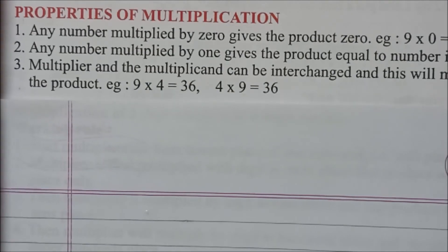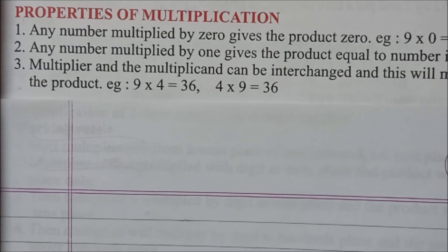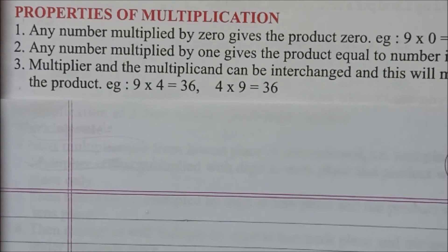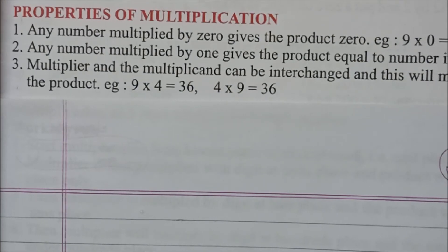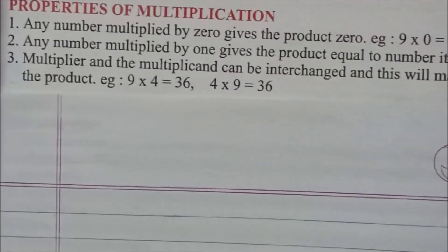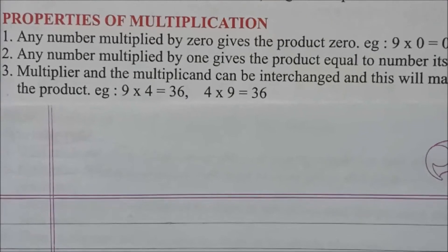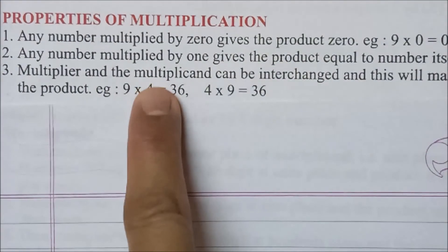The third property is multiplier and multiplicand can be interchanged. Multiplier को multiplicand मान ले, multiplicand को multiplier मान ले, यह करने से भी दोनों का product same ही होगा, वो change नहीं होगा. Interchange and this will make no difference in the product. उनके product में इससे कोई difference नहीं आएगा, कोई change नहीं आएगा.